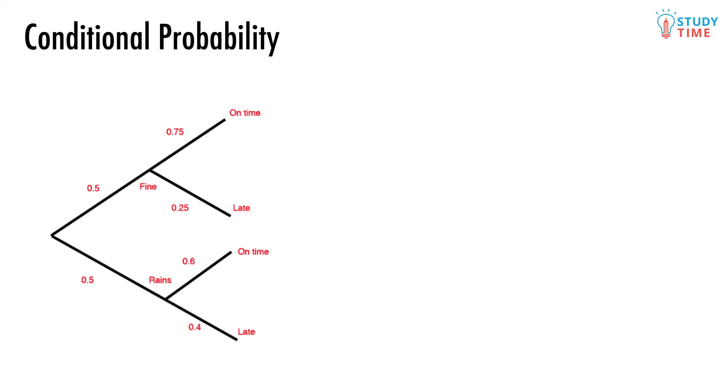Take a look at this probability tree. When the weather in Wellington's fine, Will makes it to class on time 75% of the time and he's only late 25% of the time. If the Wellington climate works against him though, things take a turn for the worse. When it rains he'll make it on time only 60% of the time, which means he's late 40% of the time. The last thing to add is that overall it rains 50% of the time in Wellington.